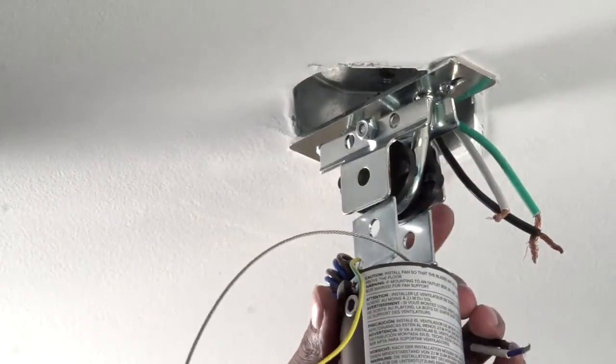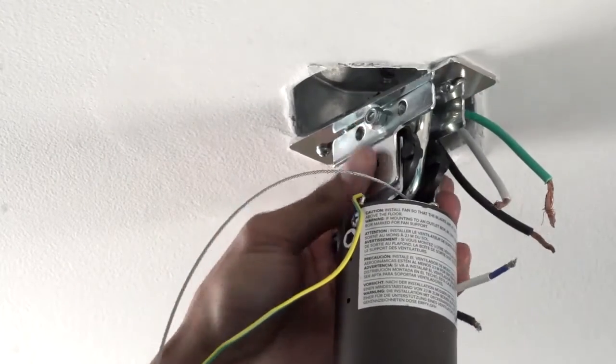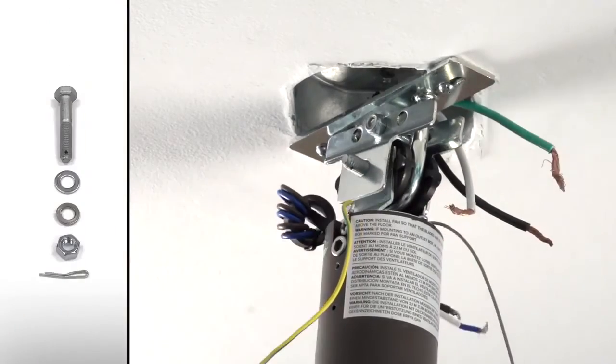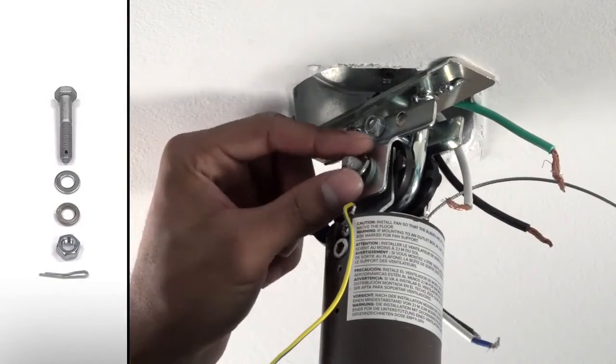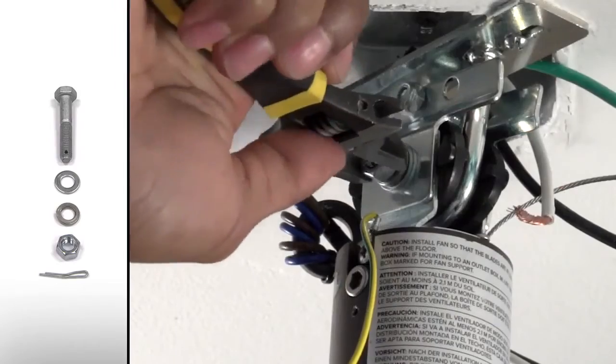Raise the extension tube to the outlet box, ensuring extension tube brackets are inserted between mounting brace brackets and rubber bushing so that mounting holes are aligned. Insert the bolt through the holes and secure on the other side with flat washer, lock washer, and nut. Tighten all hardware.